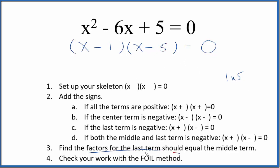Let's check our work with the FOIL method. So the first term, x times x, that gives us x squared. The outside terms, x times negative 5, that's negative 5x.